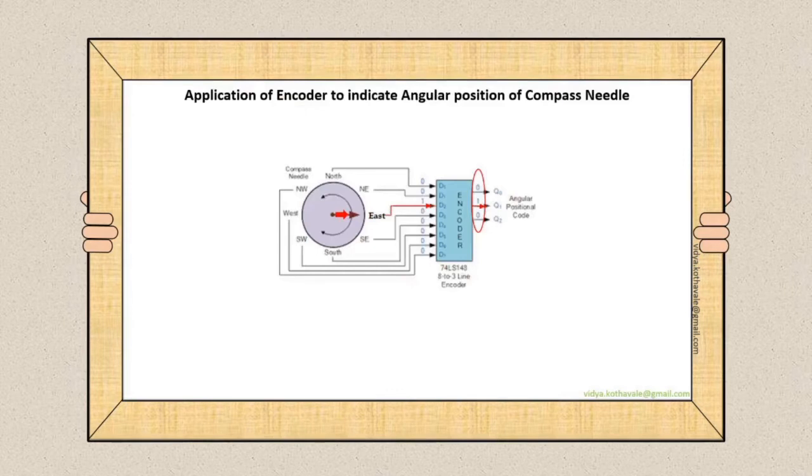Now let's come to know about how the encoder can be used to indicate angular position of a compass needle. Here, the compass needle indicates the direction east, which is the D2 input of the encoder. Therefore, the binary output equivalent to D2, that is decimal 2, which is equal to 010, is obtained at the output, indicating that the direction pointed by the compass needle is east.